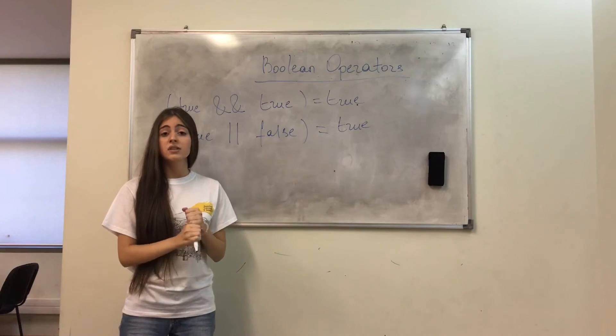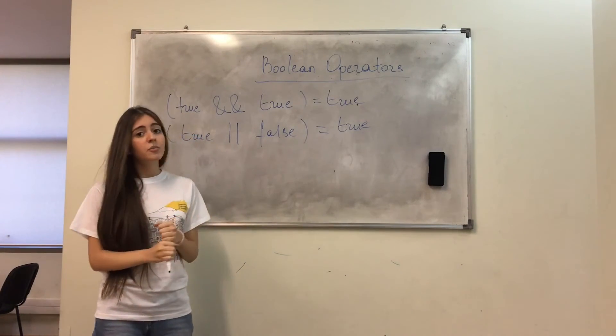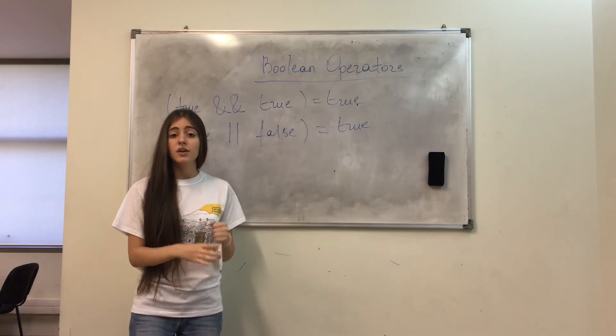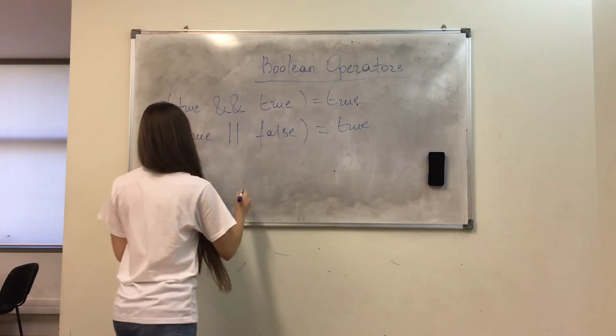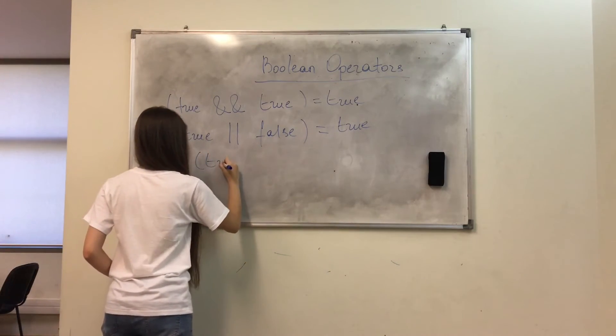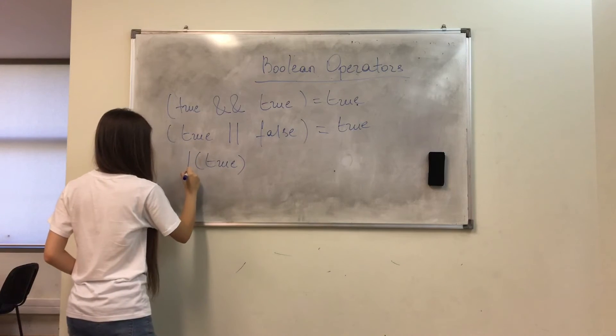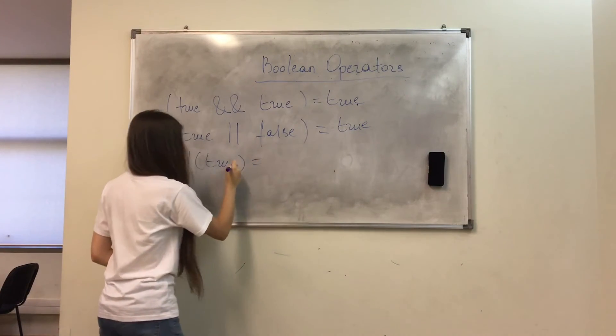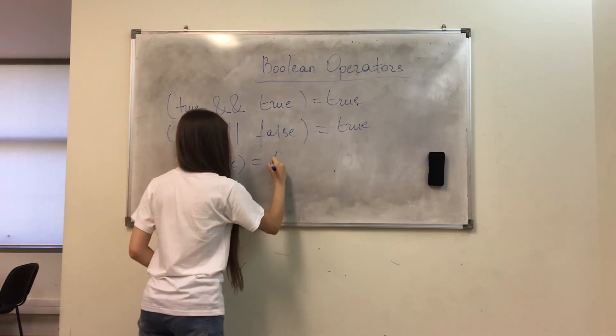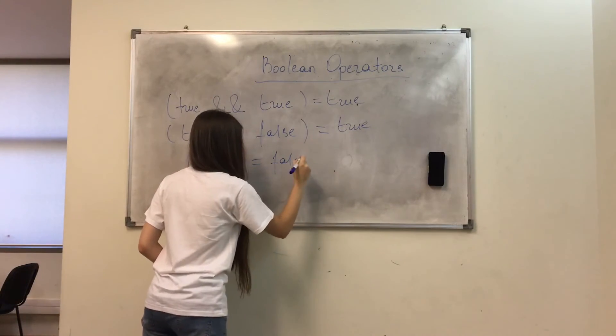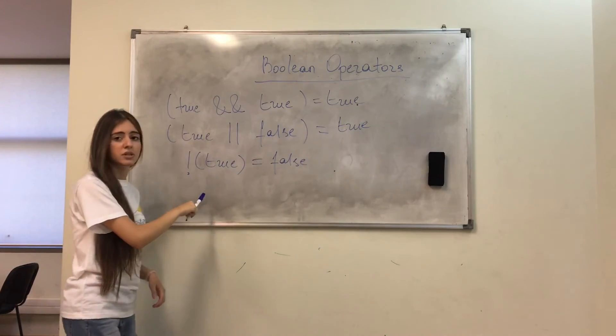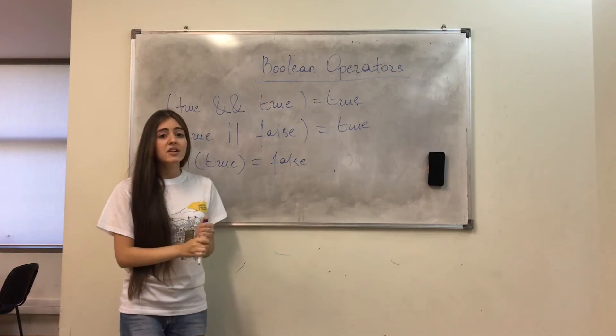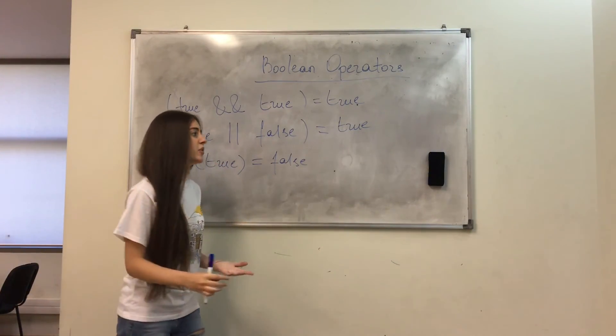And now let's talk about NOT operator. NOT operator toggles the current condition. NOT operator changes the true condition into false condition, and false condition into true condition. So, to better understand all of this, let's do the last example.